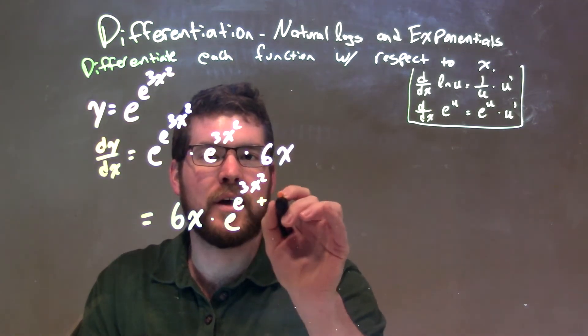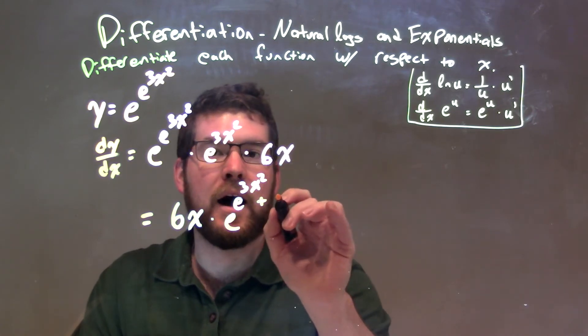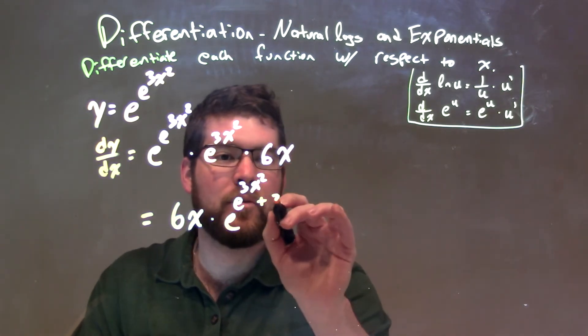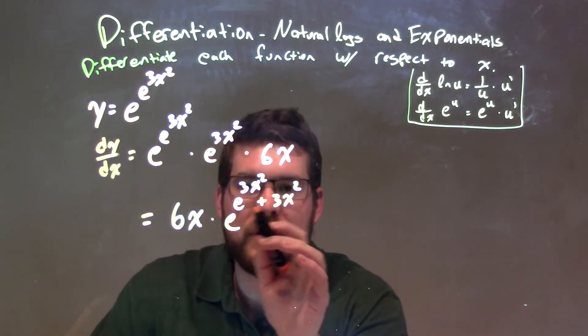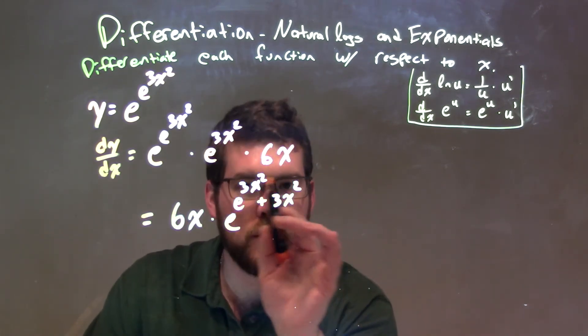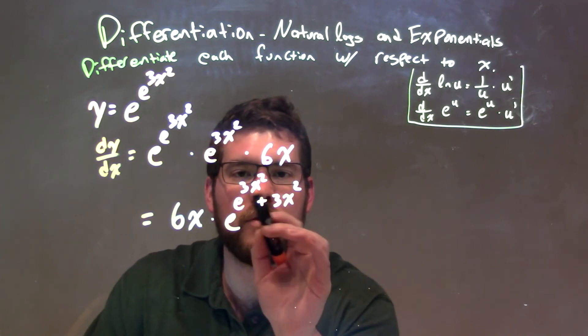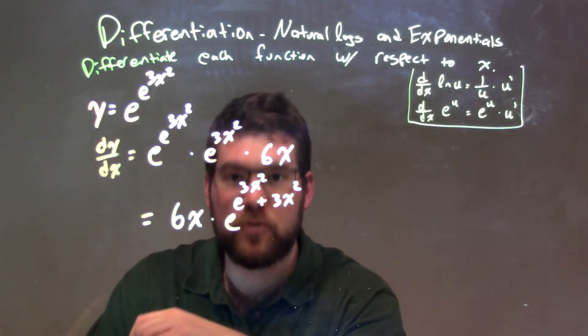So this is really another power of, or we add powers of 3x squared. We can have a final answer now. If you can see it here, it's 6x times e to the, all of this being the exponent, e to the 3x squared plus 3x squared.